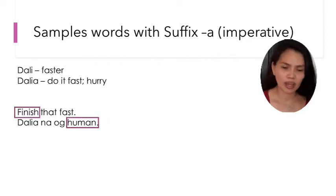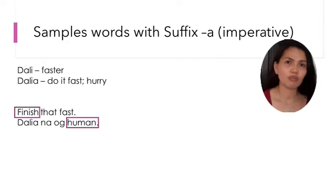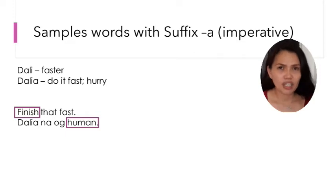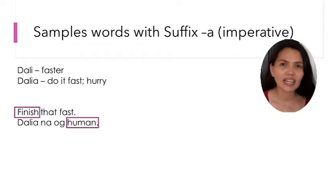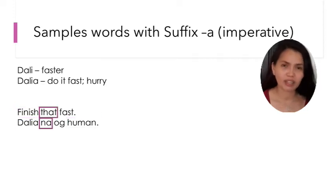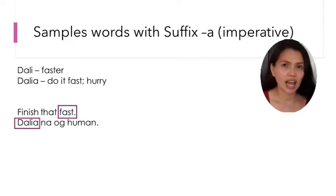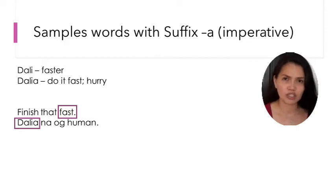Another example — 'Dali' means faster, and 'Dalia' means to move faster. Example: 'Finish that fast.' In Bisaya: 'Dali, na og kuwan' — the context is the person is rushing. 'Kuwan' means that, 'na' is a shortcut of 'kana,' and 'Dali' means fast.